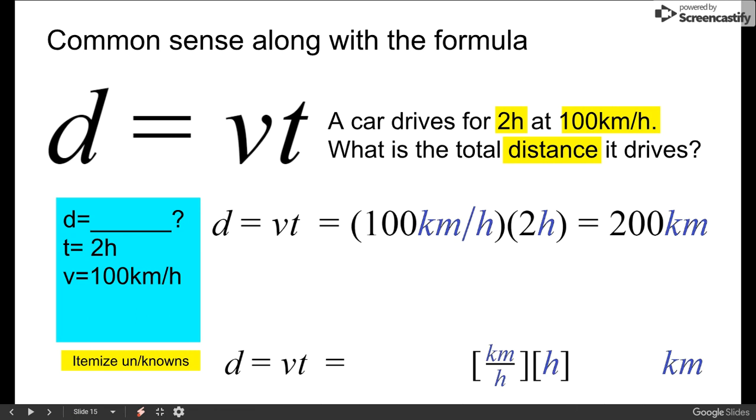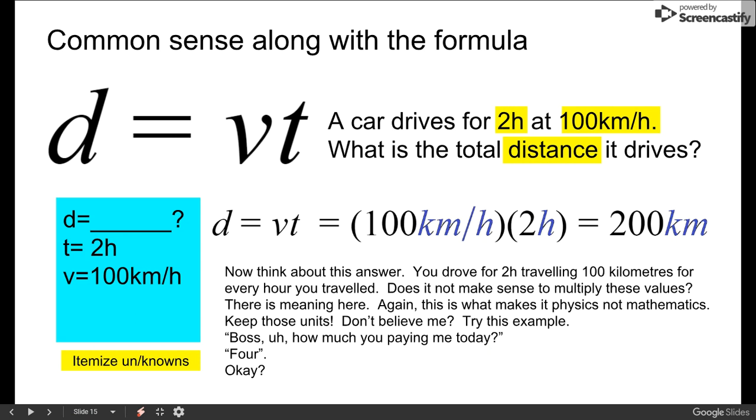Okay, so there's the unit analysis. This formula may not be correct, but it's giving us the correct unit, so we're pretty certain this is the correct formula and the units would cancel like that. Now I want you to think about this answer. You drove two hours traveling 100 kilometers for every hour you traveled. Doesn't it make sense to multiply these values?